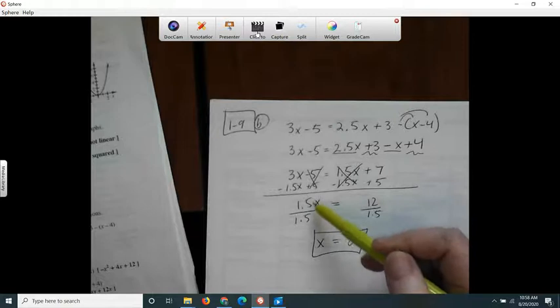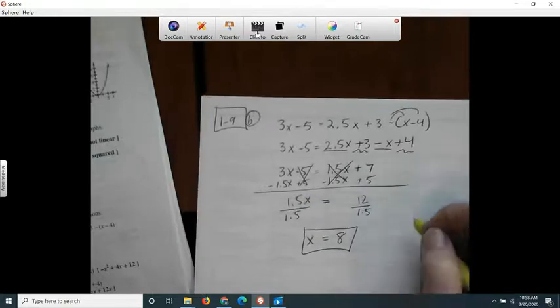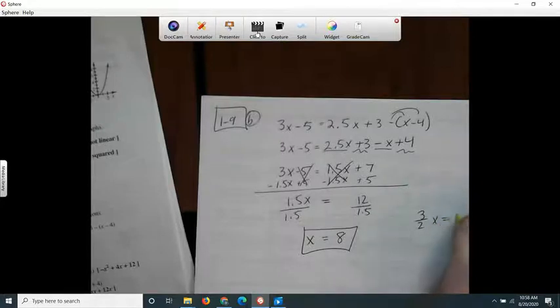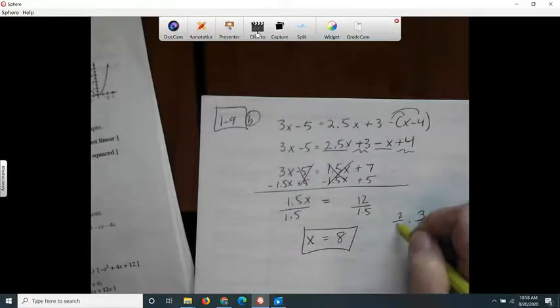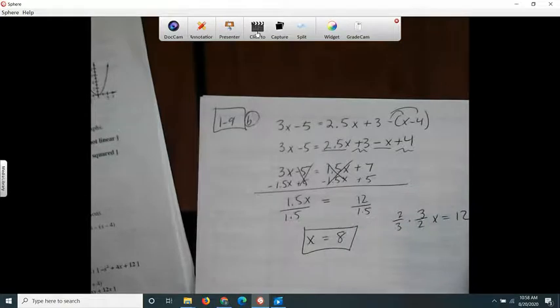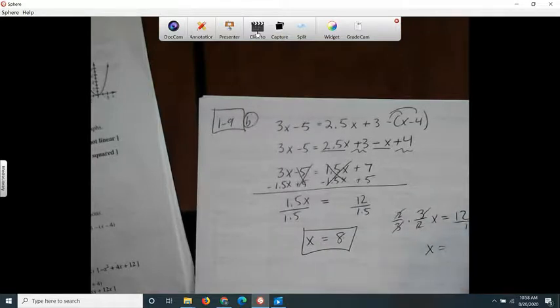There's other ways I could have done that. I could have done it this way. I could have said 1.5 is the same as 3 halves. And I could have... this is what I probably should have done. Then I wouldn't have had to get out my calculator to check it. x equals 4 times 2 is 8.